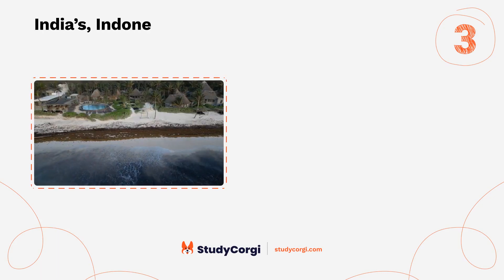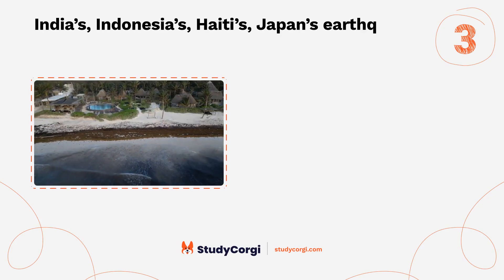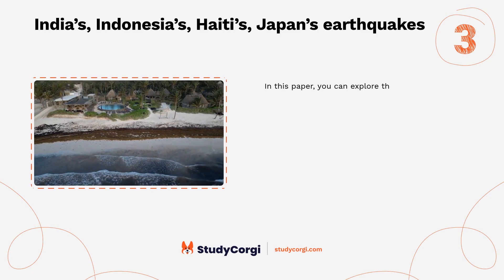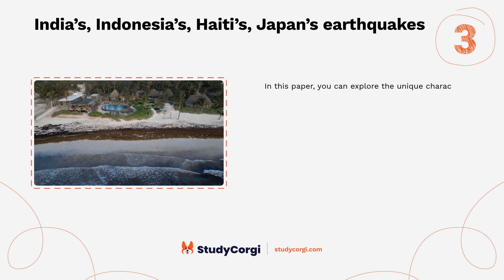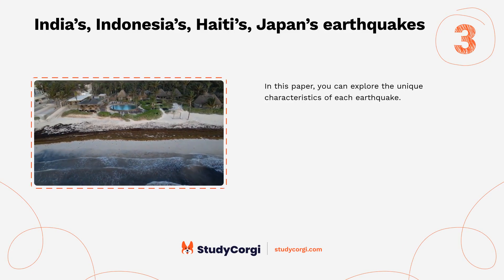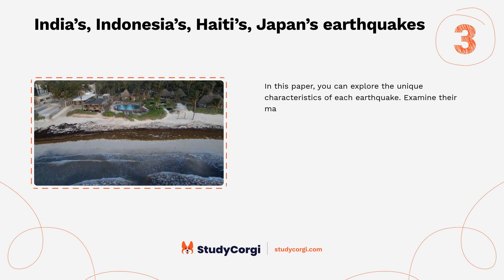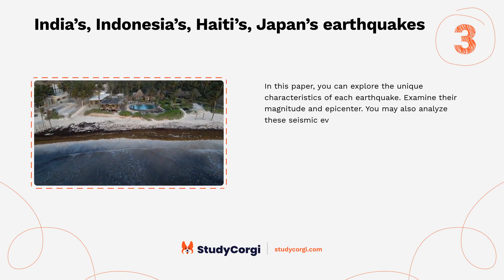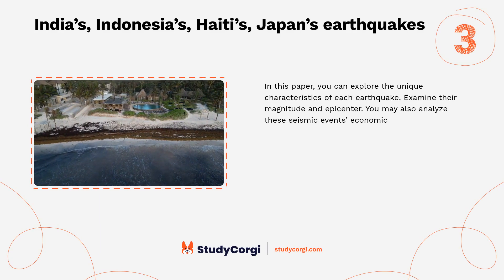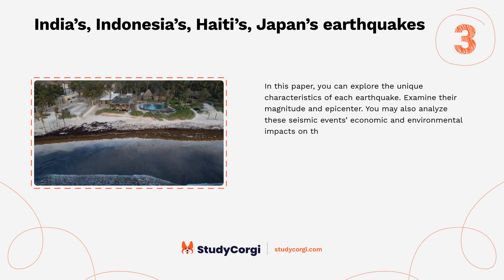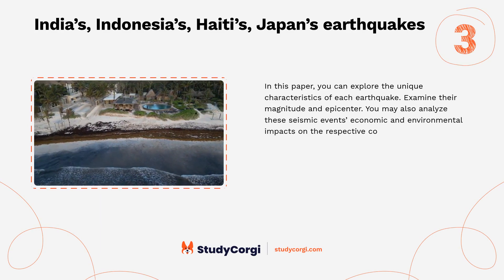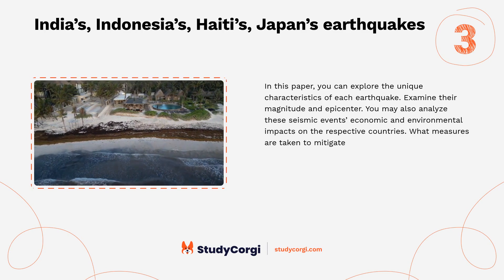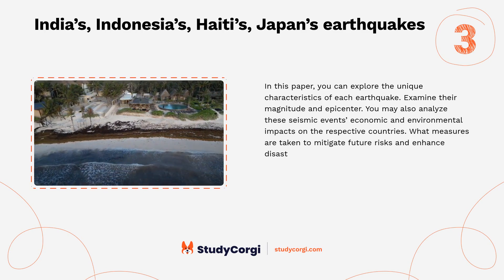India's, Indonesia's, Haiti's, and Japan's earthquakes. In this paper, you can explore the unique characteristics of each earthquake, examine their magnitude and epicenter, and analyze these seismic events' economic and environmental impacts on the respective countries. What measures are taken to mitigate future risks and enhance disaster preparedness?